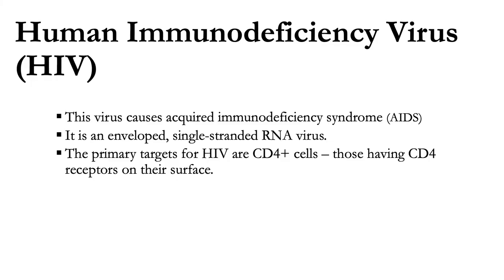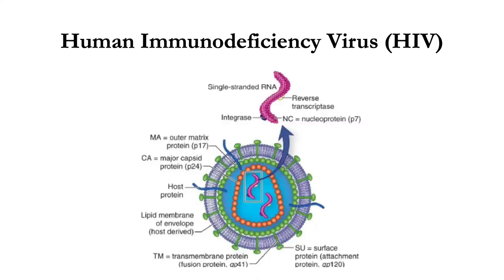HIV is an enveloped, single-stranded RNA virus that belongs to the family Retroviridae. Retroviruses are characterized by a long incubation period from onset of initial infection to presentation of disease symptoms. The primary targets of HIV are CD4 cells and those bearing CD4 receptors on their surface. HIV contains two identical single-stranded RNA molecules, and each of its 72 surface knobs contains a glycoprotein designated as GP120, which binds to a CD4 receptor on the surface of certain host cells. The stock supporting the knob is a transmembrane glycoprotein that may also play a role in attachment to host cells.